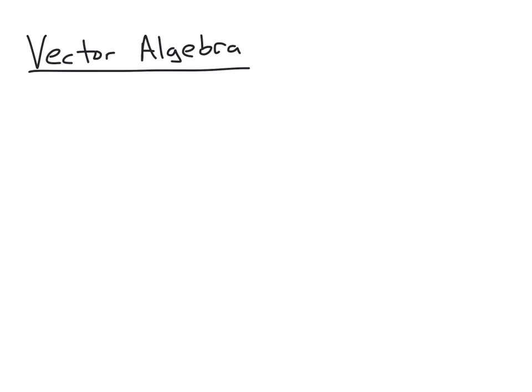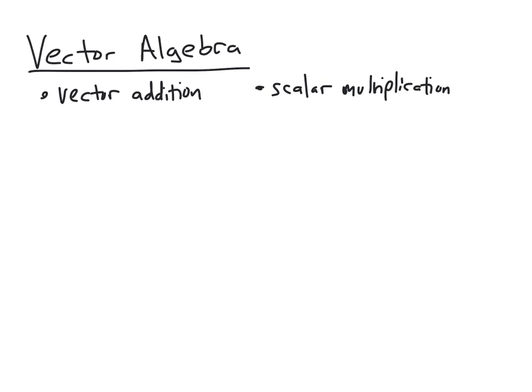Vector algebra has two basic operations. We have vector addition, which takes two vectors and adds them together to form a new vector. And we also have scalar multiplication, which multiplies a vector by a scalar. A scalar, in the context we're working, is just a real number — so we can multiply a vector by 2, 5, or negative three-fourths, whatever real number we want, and figure out what the resulting vectors would be.